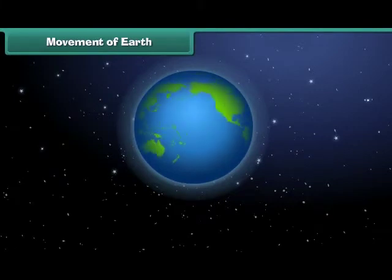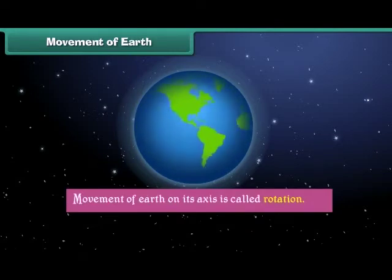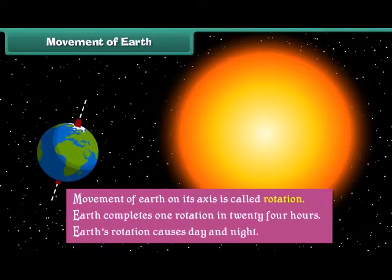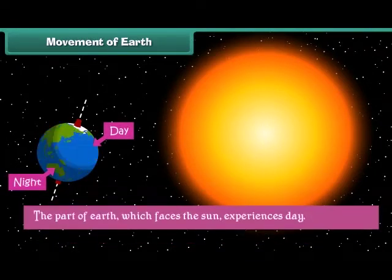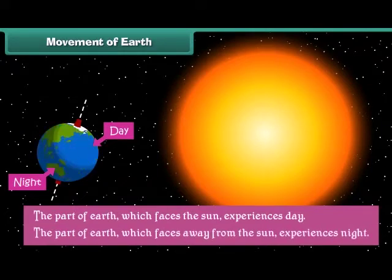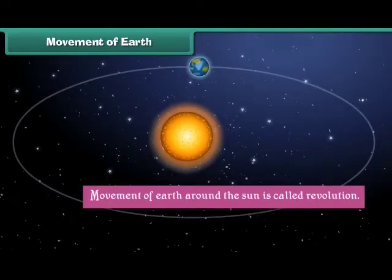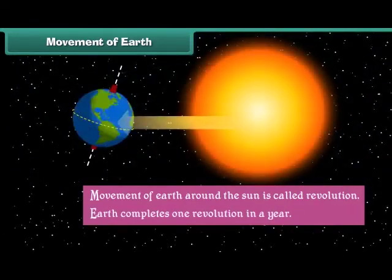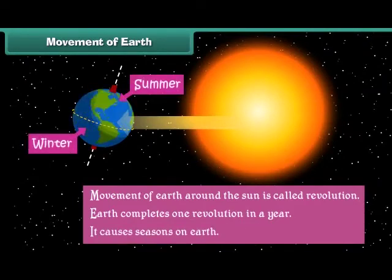Earth shows two types of movement. Movement of Earth on its axis is called rotation. Earth completes one rotation in 24 hours, and Earth's rotation causes day and night. The part of Earth which faces the Sun experiences day, and the part which faces away from the Sun experiences night. Movement of Earth around the Sun is called revolution. Earth completes one revolution in a year, and it causes seasons on Earth.